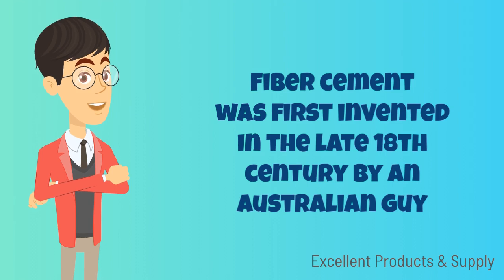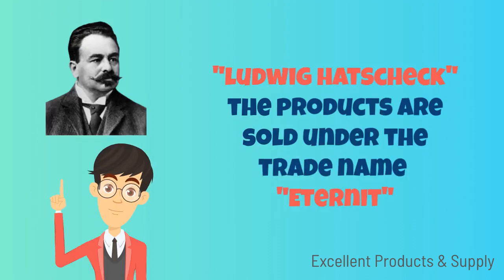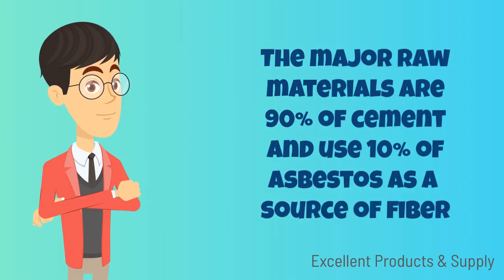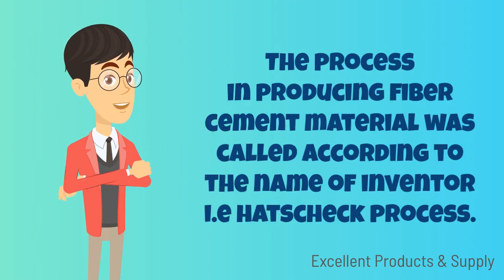Fiber cement was first invented in the late 18th century by an Australian, Ludwig Hatschek. The products are sold under the trade name Eternit. The major raw materials are 90% of cement and 10% of asbestos as a source of fiber. The process in producing fiber cement material was named after the inventor — the Hatschek process.